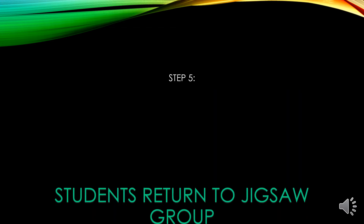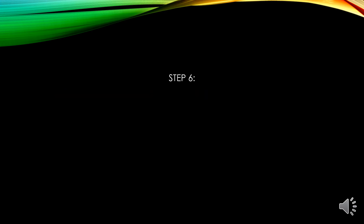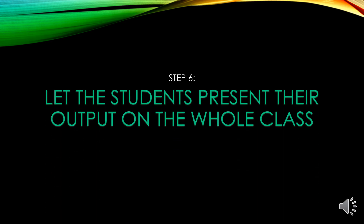Step 5: Students return to Jigsaw Group. Now that they have already gathered a bunch of ideas and learnings from their expert groups, let them return to their original Jigsaw Group and have a sharing session. Step 6: Let the students present their output to the whole class. After the exchanging of learnings on their certain topics within their Jigsaw Group, let them present it to the whole class and start assessing.